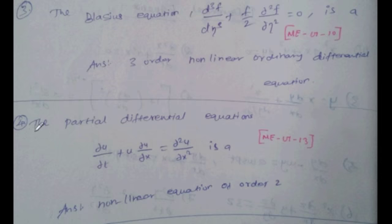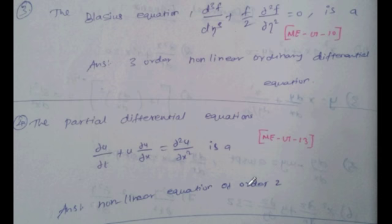Next problem: the partial differential equation. ∂u/∂t plus u · ∂u/∂x equal to ∂²u/∂x². The order is different, so it is a nonlinear second order differential equation.